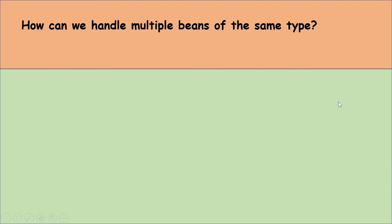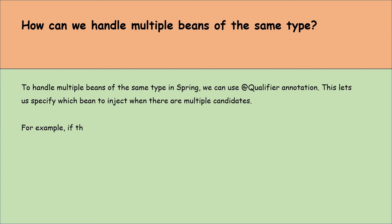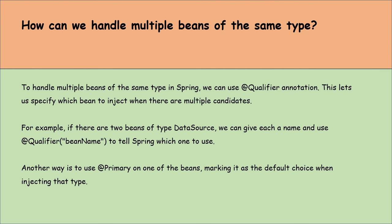How can we handle multiple beans of the same type? To handle multiple beans of the same type in Spring, we can use the @Qualifier annotation, which lets us specify which bean to inject when there are multiple candidates. For example, if there are two beans of type DataSource, we can give each a name and use @Qualifier to tell Spring which one to use. Another way is to use the @Primary annotation on one of the beans, marking it as the default choice when injecting that type.